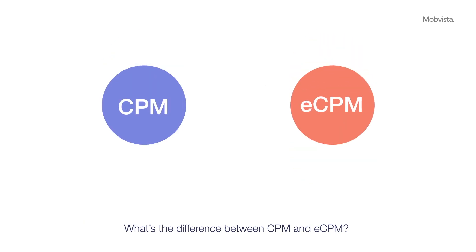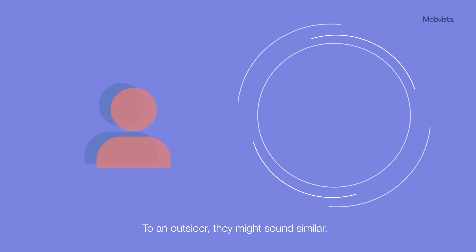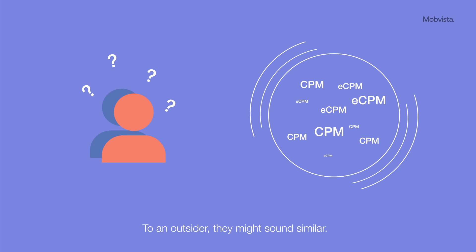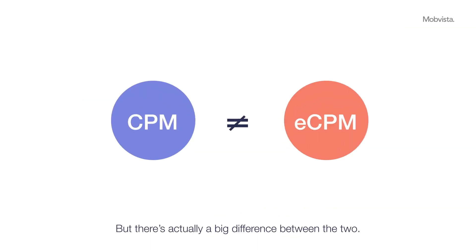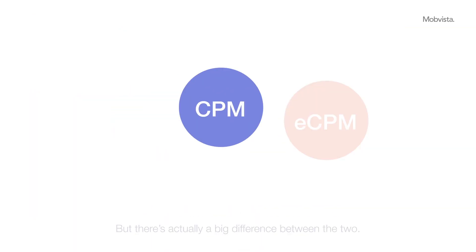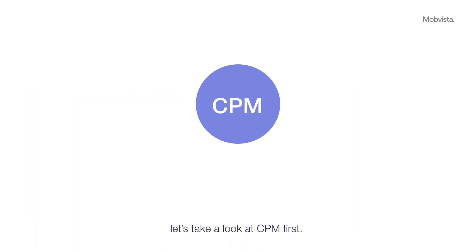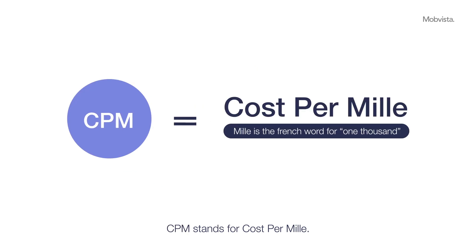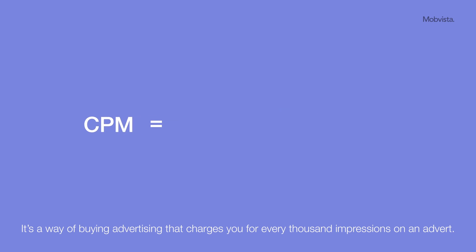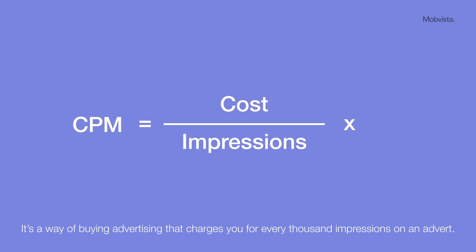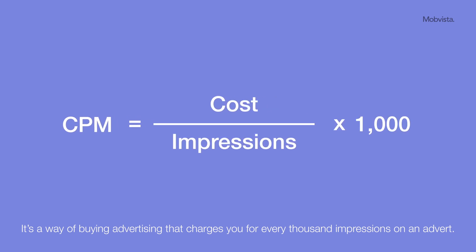What's the difference between CPM and eCPM? To an outsider they might sound similar, but there's actually a big difference between the two. Let's take a look at CPM first. CPM stands for cost per mil — it's a way of buying advertising that charges you for every thousand impressions on an advert.